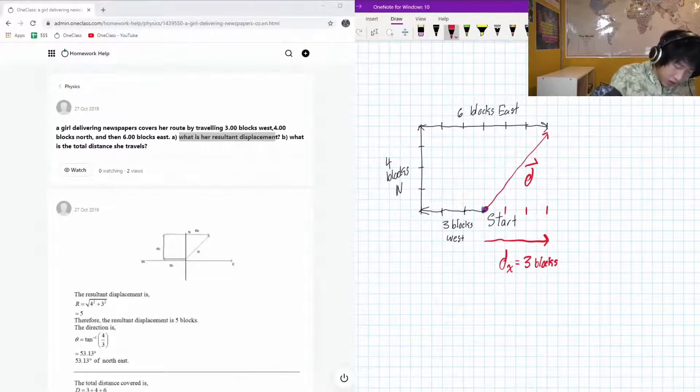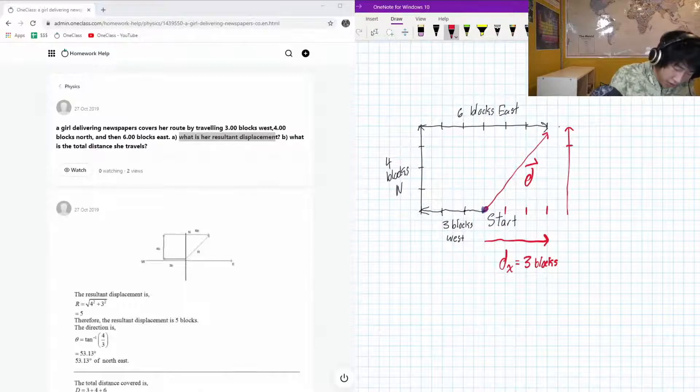So our x component of our displacement is three blocks. And our vertical component of it is, well, she traveled four blocks north and never traveled south, so we're just going to have four blocks north as our y component.